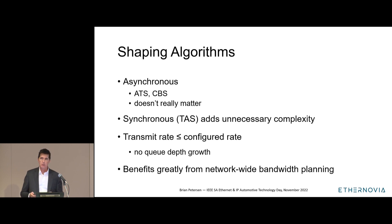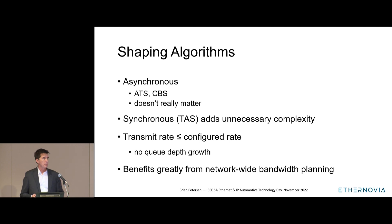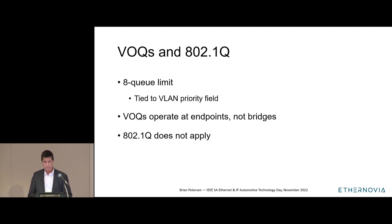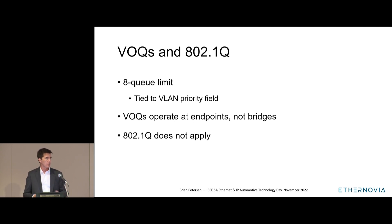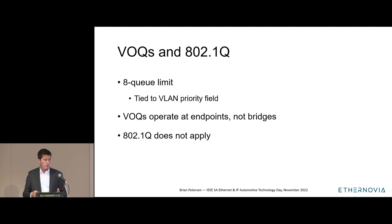For a small, simple network this could be a spreadsheet exercise; for a larger, more complex network it may require specialized tools. When talking about shapers and queues, it's natural to think about 802.1Q. However, 802.1Q imposes an eight-queue per transmit port limit as a direct result of the three-bit priority field in the VLAN tag. VOQs are implemented in the source endpoints, not in bridges, and that means 802.1Q does not apply.